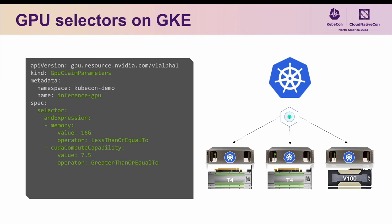For this next demo, I show how to use the selector field in the GPU claim parameters object to direct the allocation of a resource claim to a particular type of GPU. To do this, I have pre-provisioned a GKE Alpha cluster with three node pools: one for running the control plane services, one containing T4 GPUs, and one containing V100s. The DRA resource driver for GPUs has already been pre-deployed on this cluster, as well as an extra helper daemon required for DRA to work in this environment, specifically to install the NVIDIA Container Toolkit and make sure that support for the container device interface is enabled in containerd.